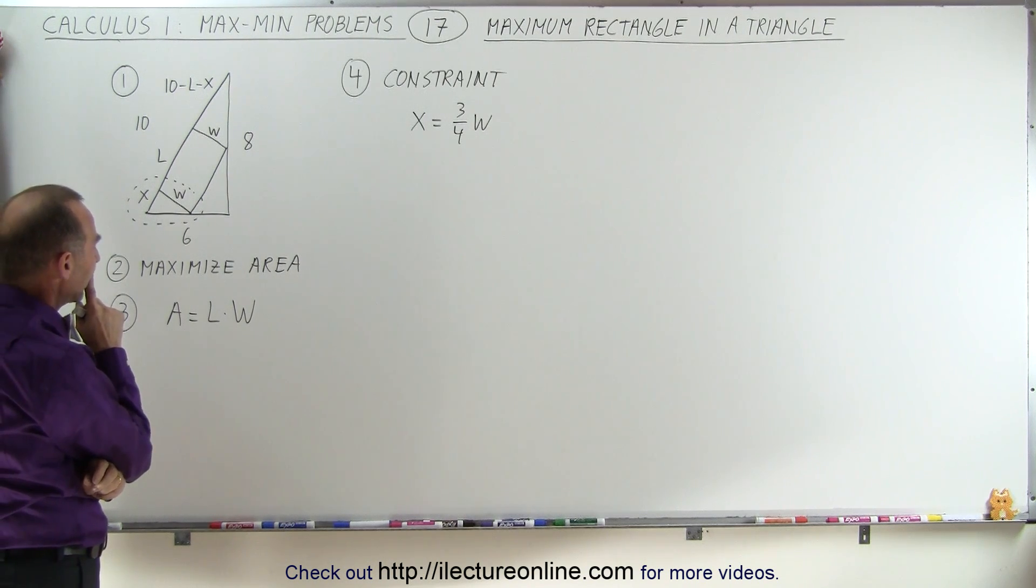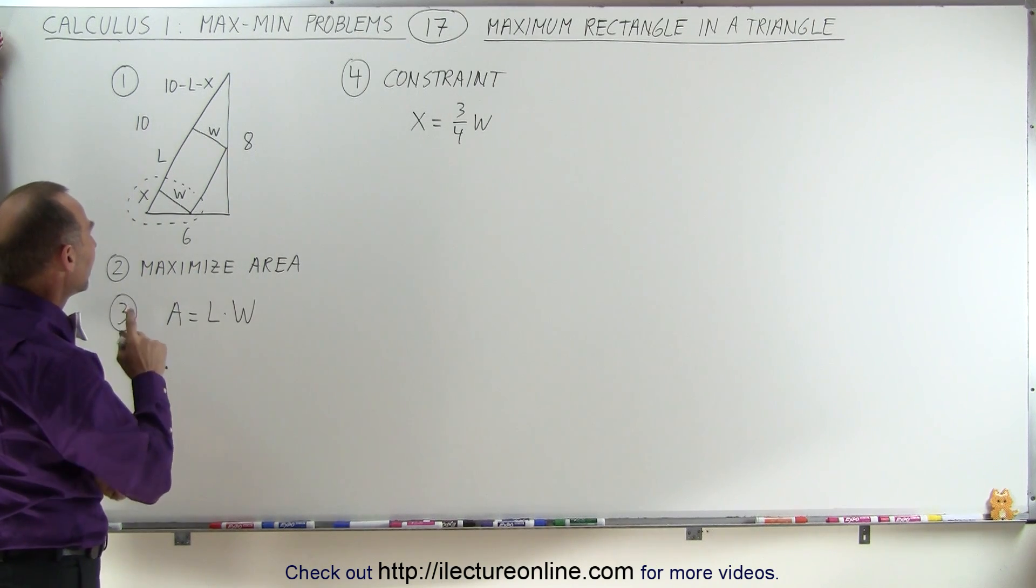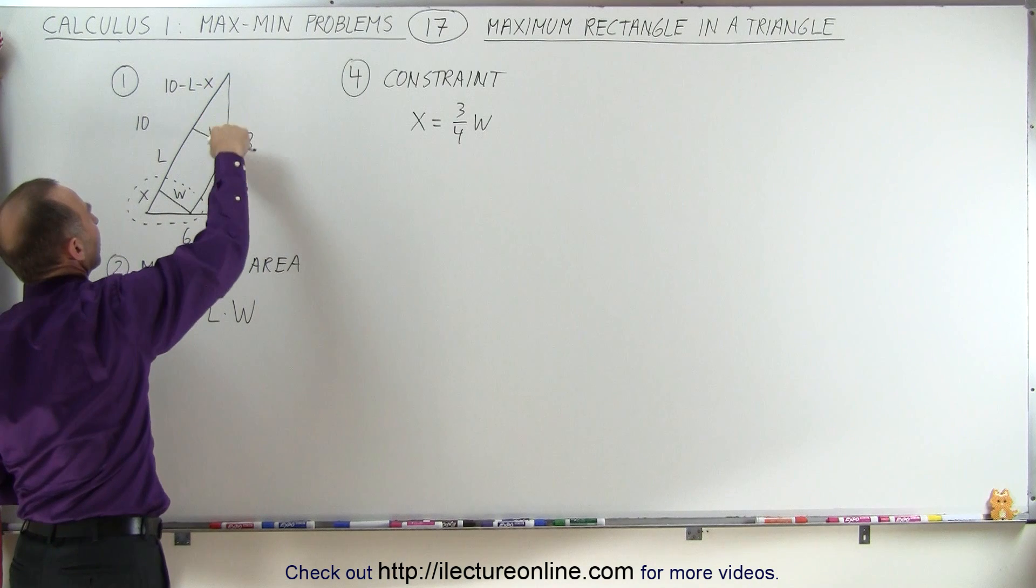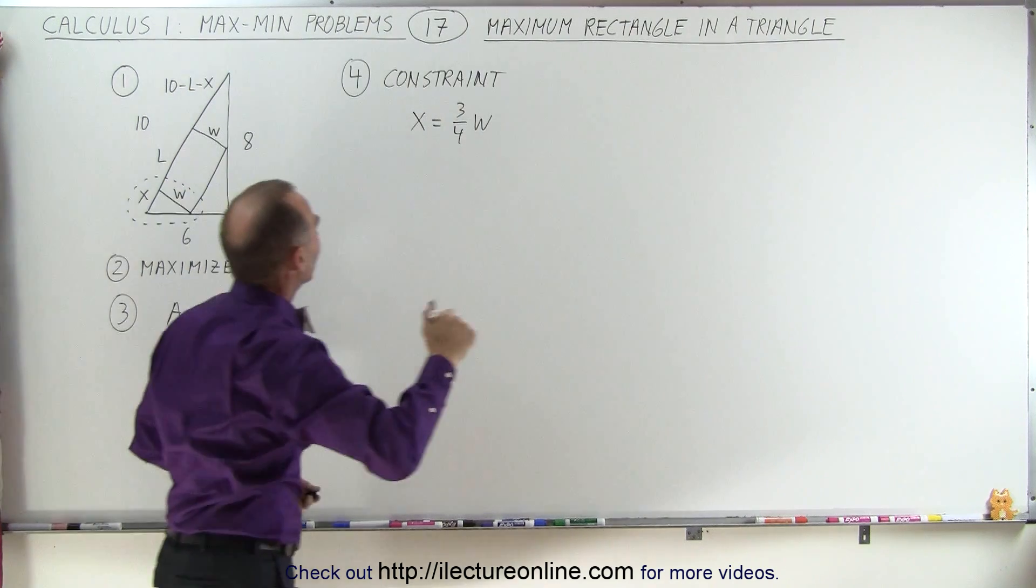Alright, now we have W, now we have to somehow convert that to L, right? We need to relate W and L, which means we can go to this triangle right here and do the same thing. We can say that W is equal to 3 quarters this distance. So let's try that.